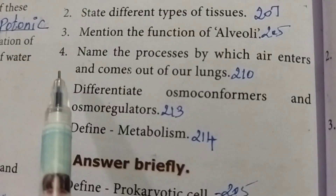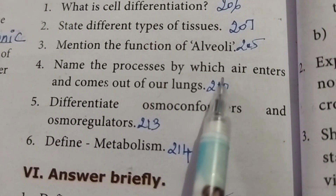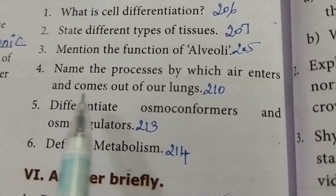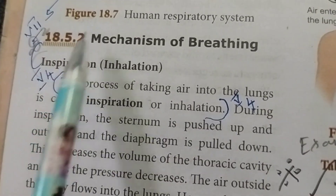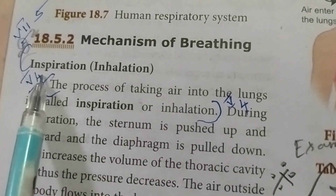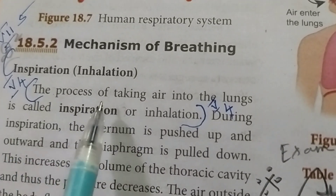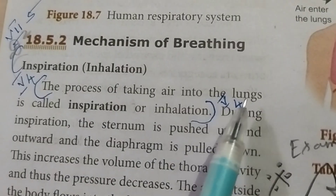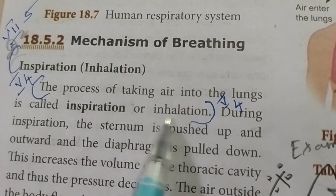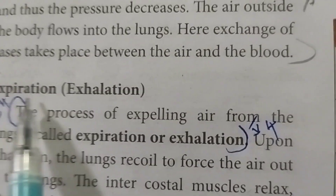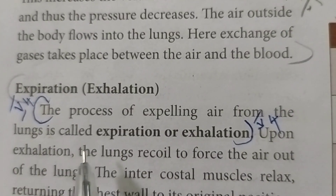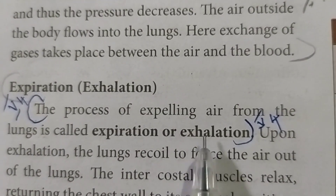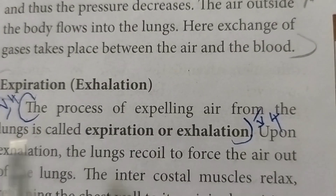Fourth: name the processes by which air enters and comes out of our lungs. The mechanism of breathing involves two processes: inspiration (inhalation) — the process of taking air into the lungs — and expiration (exhalation) — the process of expelling air from the lungs.